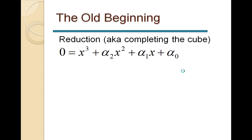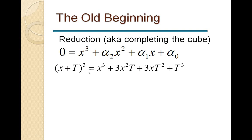The second step is the reduction — for the quadratic case this was known as completing the square, but here it is completing the cube. The idea is: when you look at x³ plus α₂x², you need to add something so this becomes a full cube. A full cube is (x+t)³, which expands to x³ plus 3x²t plus 3xt² plus t³.